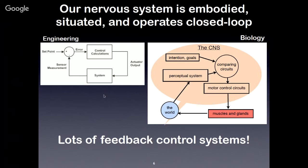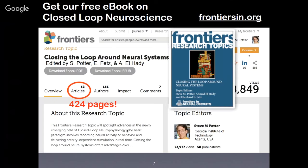Not only in engineered systems do we have a lot of feedback, but also in biological systems as well. Here's my little engineering drawing of the brain. You've got the world being perceived by the perceptual system, some goals to do something in the world, and motor circuits controlling your movements. Your perceptual system notices how well your last movement happened and compares it to your goal. Circuits like the cerebellum are adjusting your motor circuits to make it work better next time. There's lots of feedback in all control systems — not so much in neuroengineering yet, but we're trying to change that.